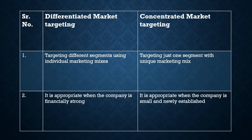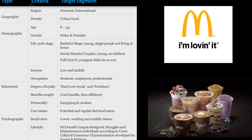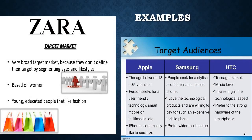Differentiated market targeting is appropriate when the company is financially strong, while concentrated market targeting is appropriate when the company is small and newly established. We can see many examples in our day-to-day world. McDonald's is the best example — their target market is both males and females, and they focus on different income groups. We can see their geographical, demographic, behavioral and psychographic segmentation. Other companies like Zara, Apple, Samsung, and HTC are all indulging in segmentation as well as targeting.